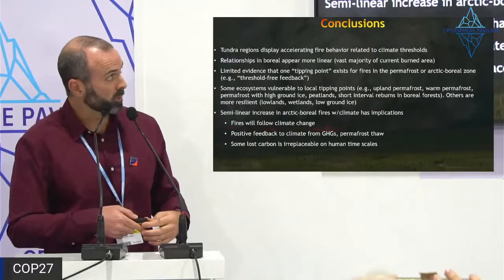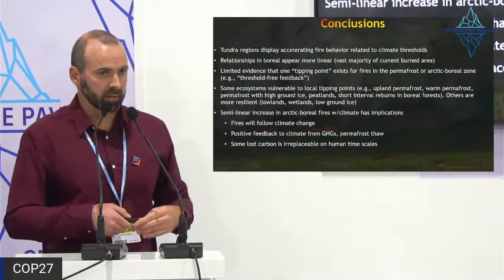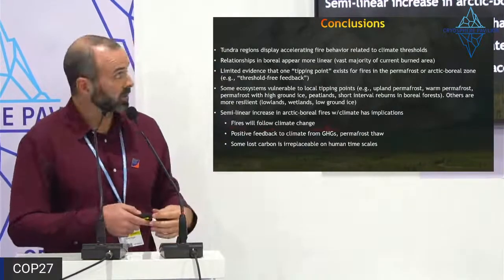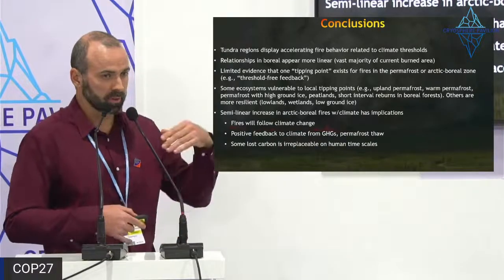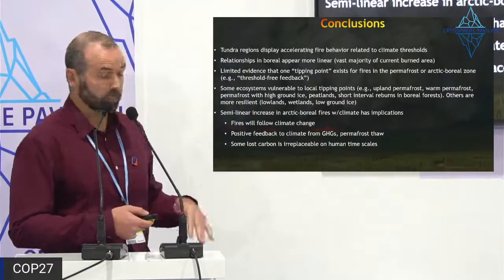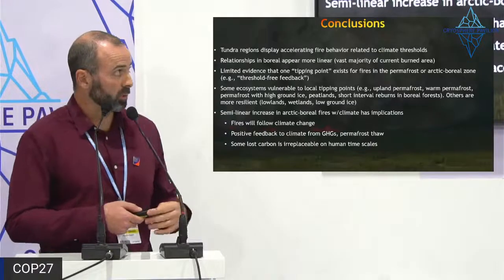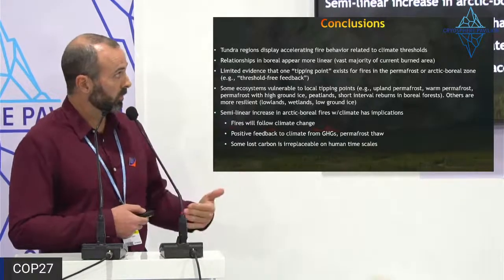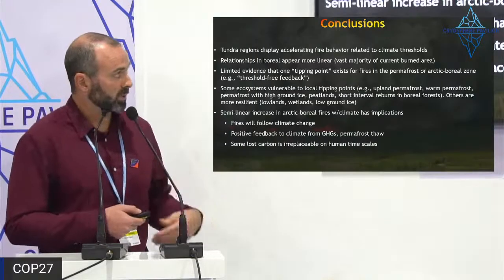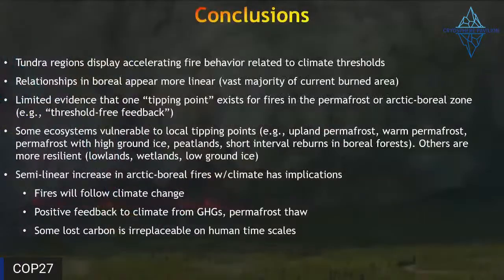In conclusion: tundra regions display accelerating fire behavior related to climate thresholds. Relationships in the boreal appear more linear, and that is the vast majority of burned area. Similar to the previous talk, there is limited evidence for one tipping point for all fires across the Arctic boreal zone — what's called a threshold-free feedback. We definitely see some ecosystems vulnerable to tipping points: upland permafrost with high ground ice, peatlands, and short-interval reburns in boreal forests. Other systems, especially lowlands, wetlands, and permafrost with low ground ice content, appear more resilient.